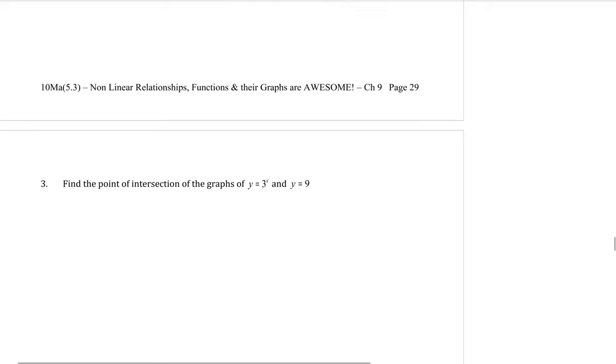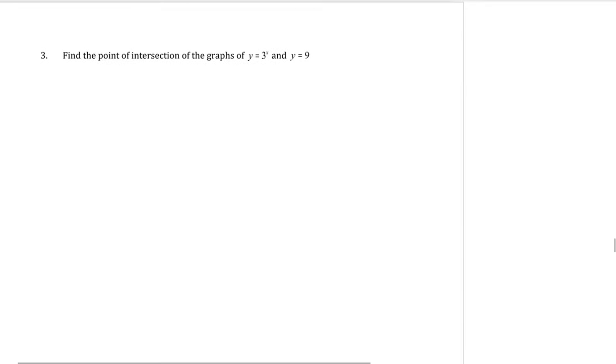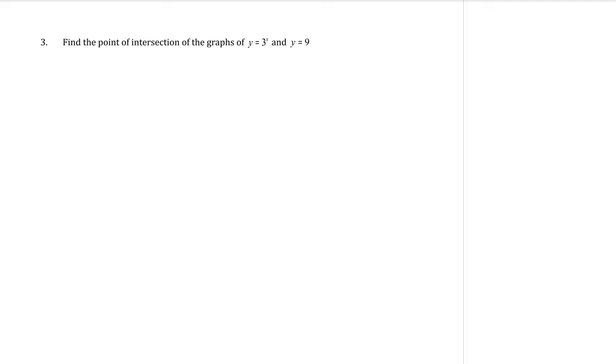Question 3: Find the point of intersection of the graph of y equals 3 to the x and y equals 9. So the point of intersection means that we need to solve these simultaneously. This is equation one, and this one's equation two. Because in both of them y is by itself, we can sub equation two into equation one. Taking y equals 9 and putting that there, so that is 9 equals 3 to the power of x.